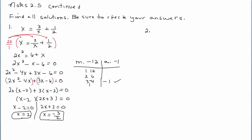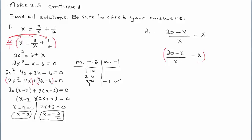Now let's do another example. We have (20 minus x) over x equals x. Like Example 1, we can multiply by the least common denominator. Since x is over 1, the LCD would just be x. Another technique would be to put x over 1 and cross-multiply — the results will be the same. I'll go ahead and rewrite the problem and multiply by the LCD. Between 1 and x, the least common denominator is x. I'll put x over 1 and disregard the one when multiplying a term that doesn't have a fraction.